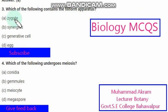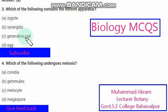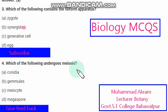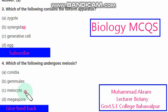Which of the following contains the filiform apparatus? The right option is option B — Synergids. Which of the following undergoes meiosis? The right option is option C — Meiocytes.